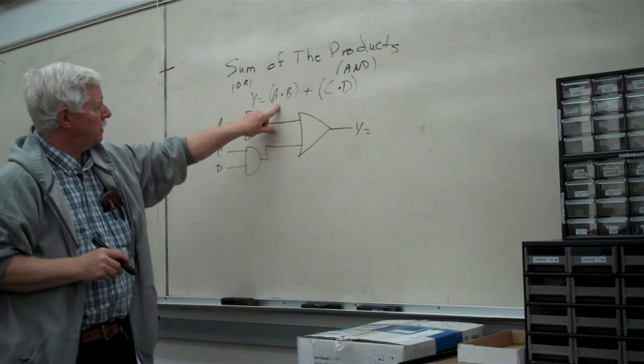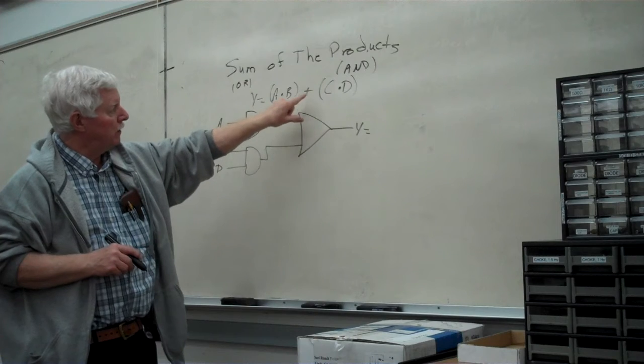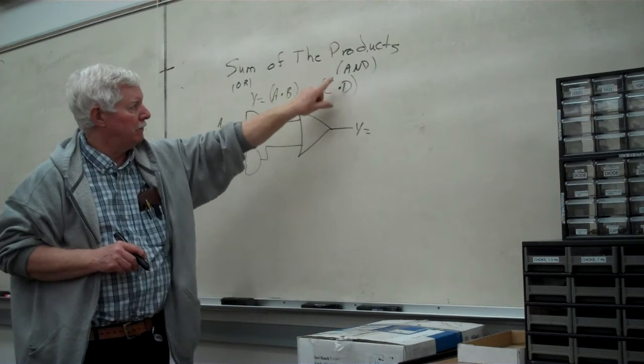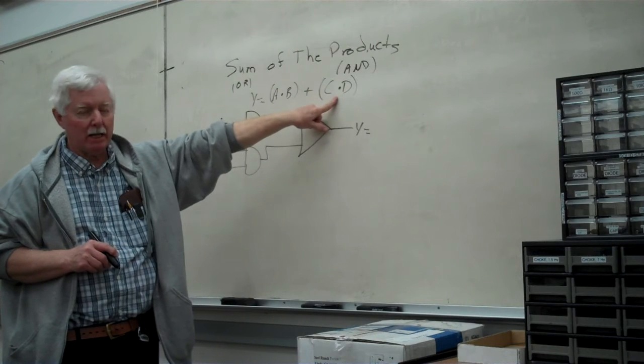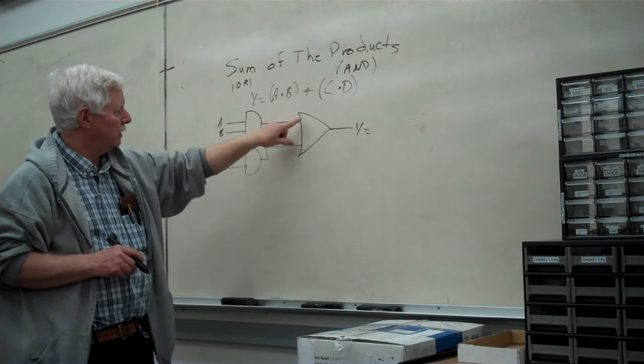So as we're looking at the expression A and B, it's a quantity all by itself. It's going to be ORed or it's going to be a sum of this other AND gate which is products called C and D here. A and B and it are going to be ORed.